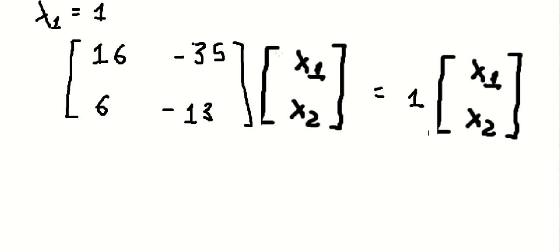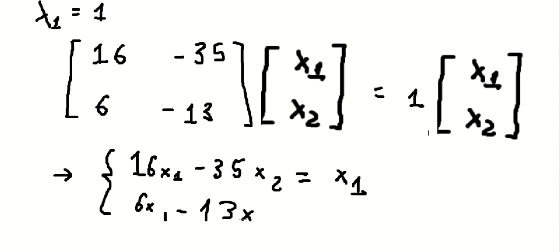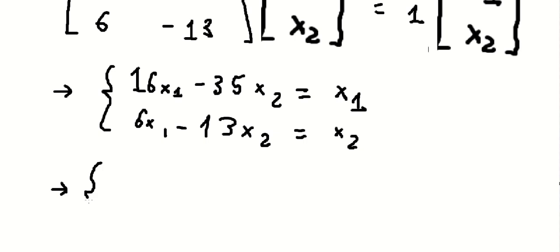So that means 16 multiplied by x1, negative 35 multiplied by x2, equals to number one multiplied by x number one. In here, this one, number 6 with x number one, minus 13 x number two equals to x number two, x number two. So we put this one go in here and this one go in here.